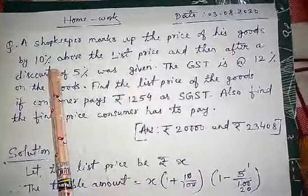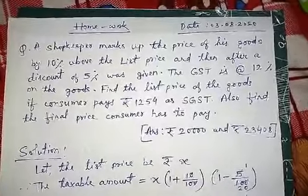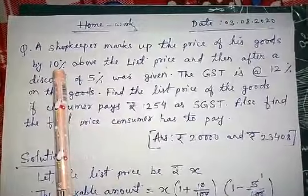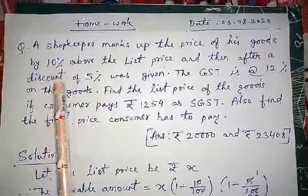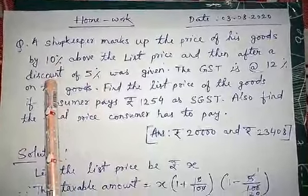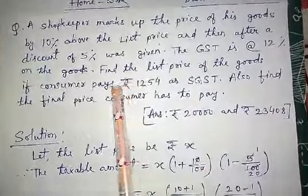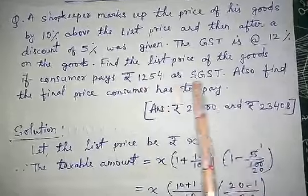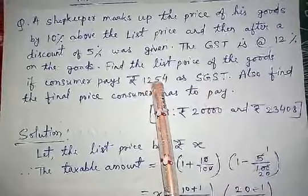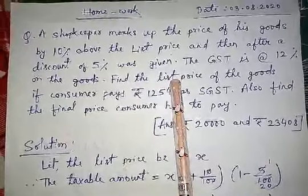Third question: a shopkeeper marks up the price of his goods by 10% above the list price and then gives a discount of 5%. This is a very clever shopkeeper — he first increased the price by 10%, put a new sticker, and then offered 5% discount. After that, 12% GST is applied. Find the list price if the consumer pays Rs. 1,254 as SGST. When we know SGST, we automatically know CGST too since both are equal. We also need to find the final price.